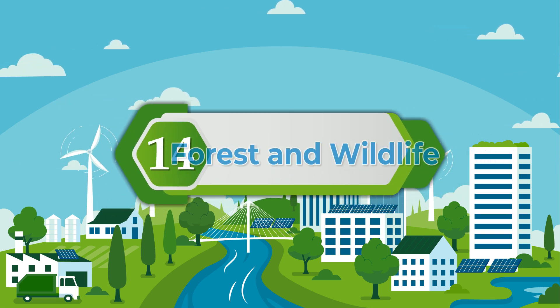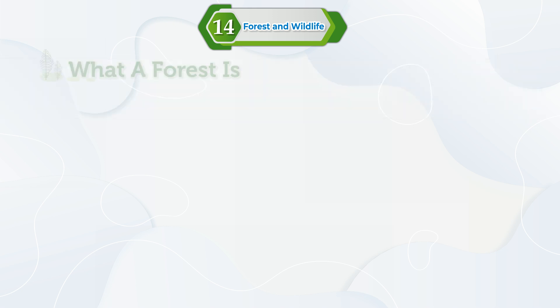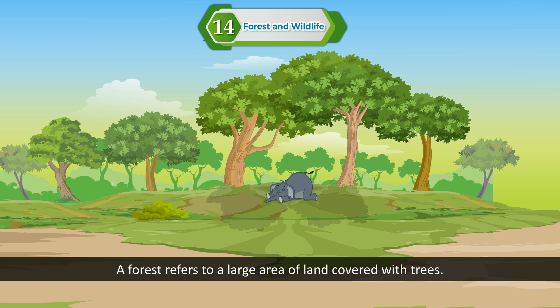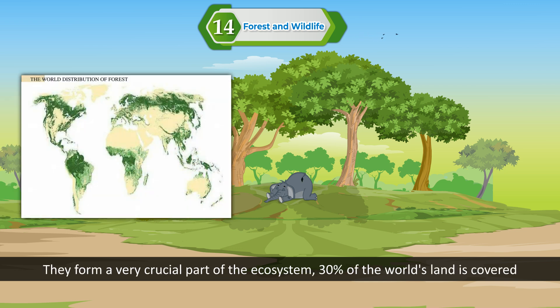Chapter fourteen: Forest. We will learn about what a forest is, kinds of forests, importance of forests, conservation of forests, and wildlife in India. A forest refers to a large area of land covered with trees. It is a vital natural resource and keeps a key place in our lives. We are very much dependent upon the forest. They form a very crucial part of the ecosystem. Thirty percent of the world's land is covered with forest.